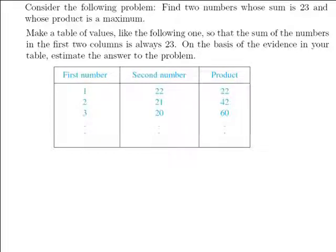So you can see we started with 1, 1 plus 22 is 23 and the product is 22. 2 plus 21 is 23, the product is 42. So we'll go ahead and just continue on with this table. We'll have 4 and that'll be a 19 here. And then 5 and 18. 6 plus 17 is 23.